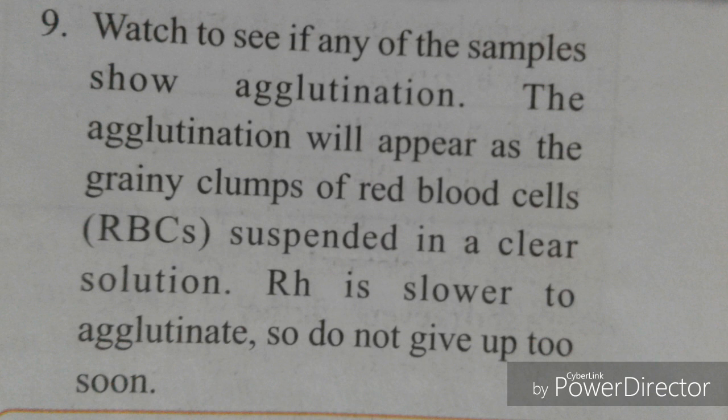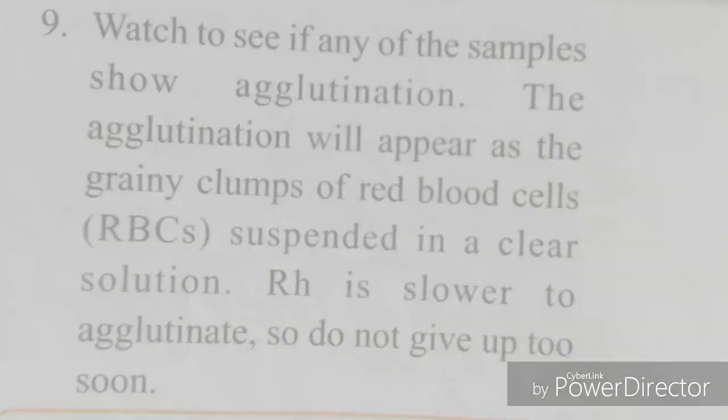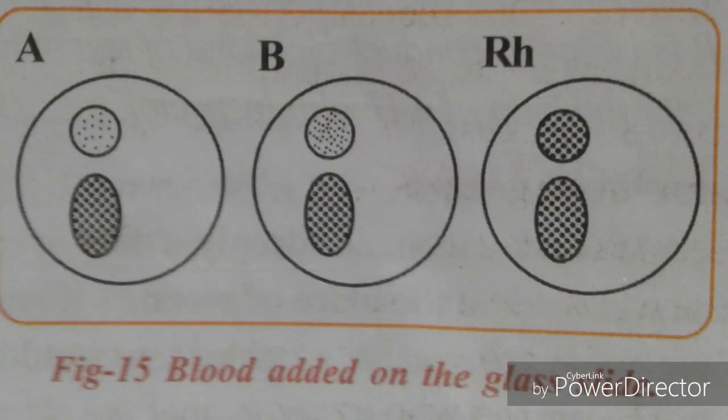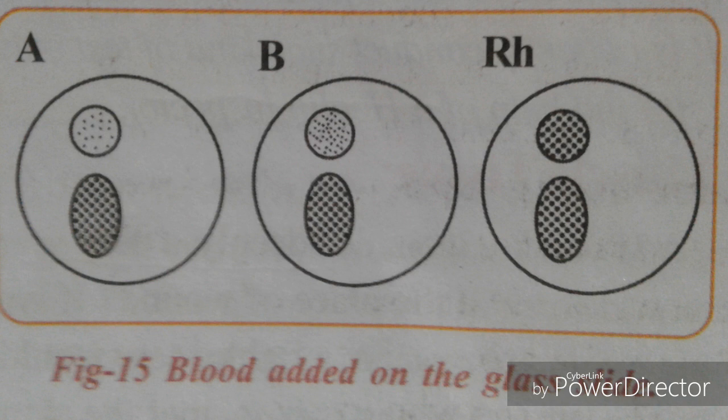Now let us move on to the result and inference of the experiment. Determine the blood type depending on the result — the following table can be used to determine the blood type. In this particular picture, anti-A sera, anti-B sera, and anti-RHD sera are shown.